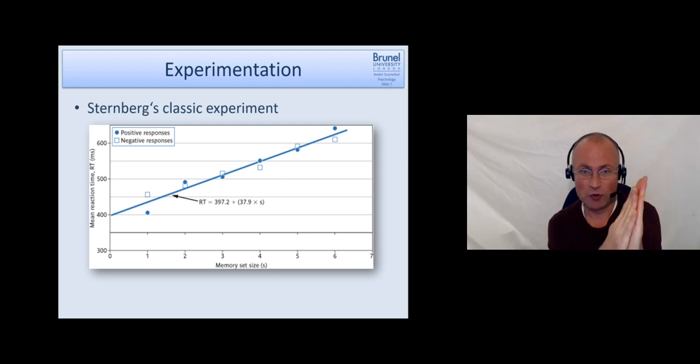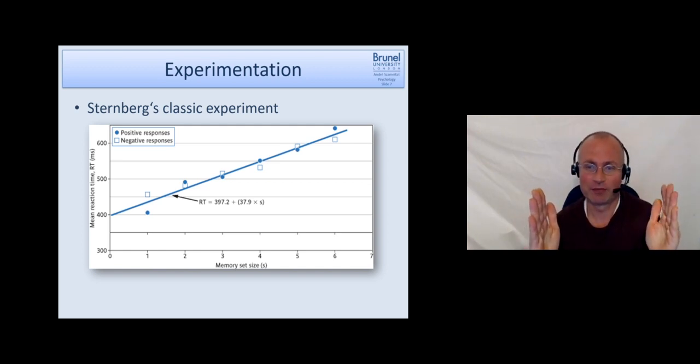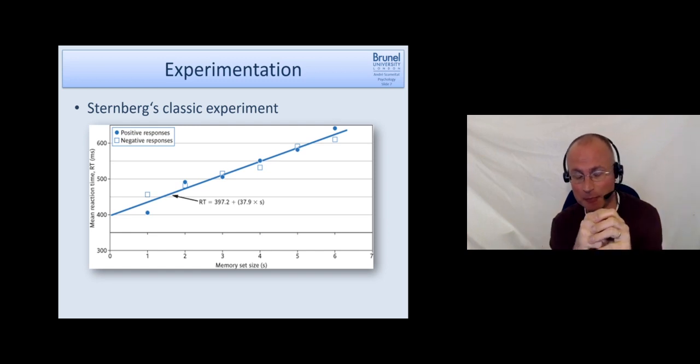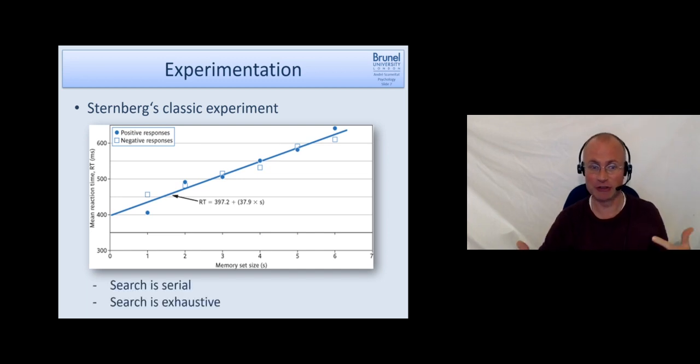In negative responses, participants always have to search the whole set because they have to look at every item to make sure it's not in there. He sees the positive and negative responses have the same response time, so what he inferred in addition to that search is serial, he termed it searches exhaustive. So even our cognitive system, when it found the item we are looking for, it searches through the remaining items and looks at them as well before we press yes or no. Again, an illustration of how just analyzing response times can tell us about the mechanisms, the underlying mechanisms in the brain.